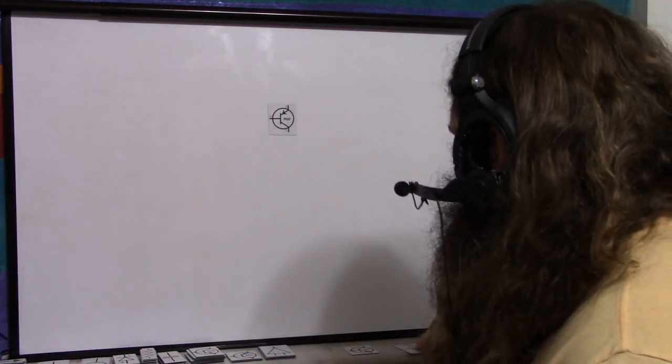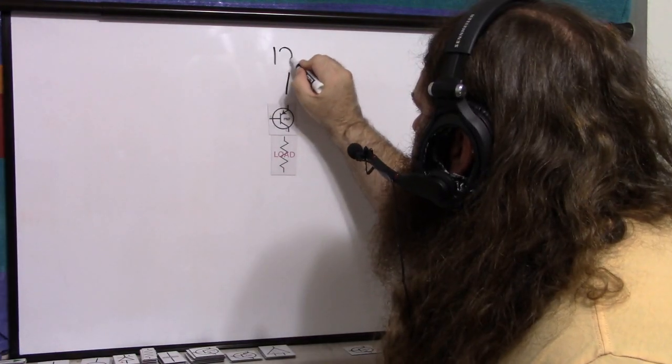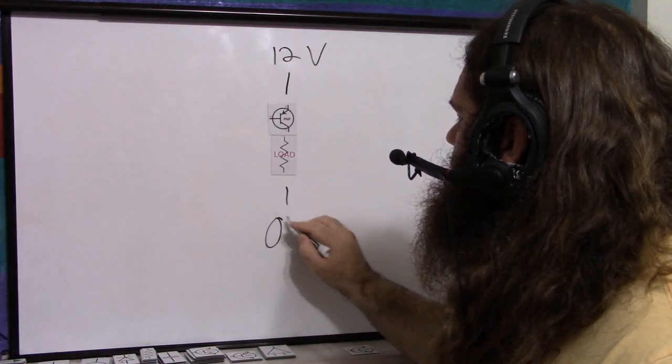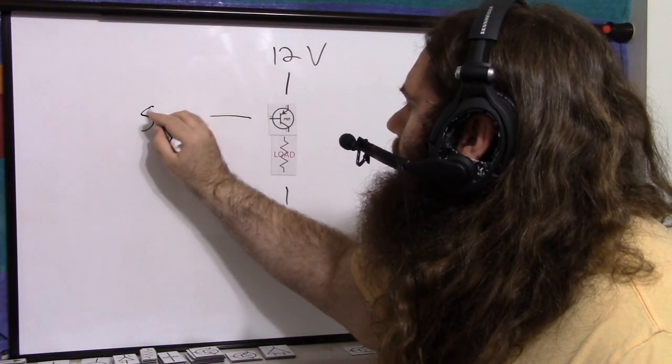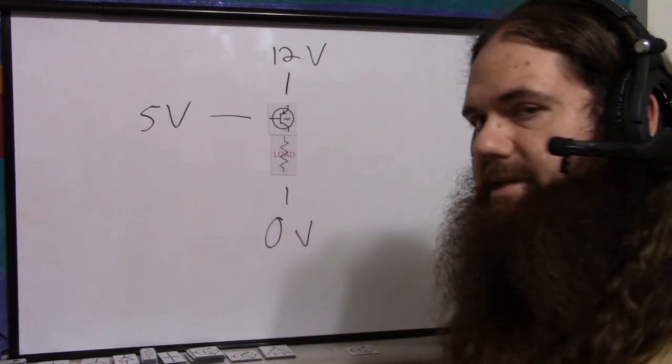But if you have a PNP transistor with the load on the low-side, so it's a high-side switch, you put your 12 volts on the emitter, got your 0 volts down here, and your 5 volt control signal, so you're trying to turn the PNP off, you can see that's not going to work.